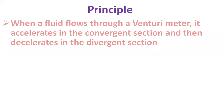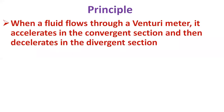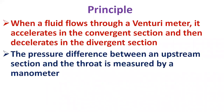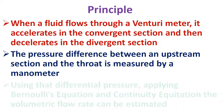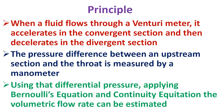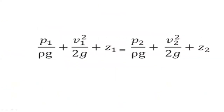Looking at the working principle of the venturimeter: when a fluid flows through a venturimeter, it accelerates in the convergent section and retards in the divergent section. The pressure difference between the upstream section and the throat is measured by a manometer. Using that differential pressure and applying Bernoulli's equation and the continuity equation, the volumetric flow rate can be estimated. This is the Bernoulli's principle, which states with reference to pressure, the kinetic energy and the gravitational potential energy of the fluid flow.